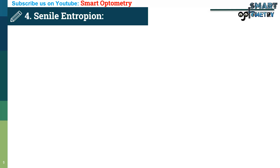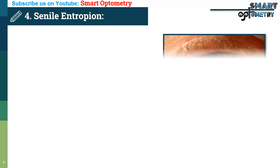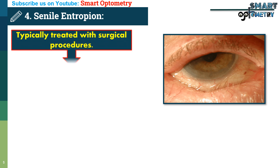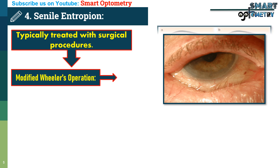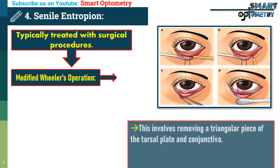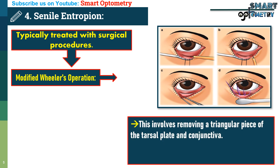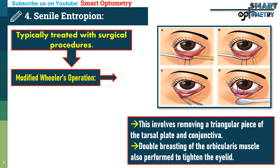Treatment of senile entropion: Senile entropion, the most common type in older adults, is typically treated with surgical procedures. Modified Weis operation: This involves removing a triangular piece of the tarsal plate and conjunctiva. Double breasting of the orbicularis muscle is also performed to tighten the eyelid and correct the entropion.